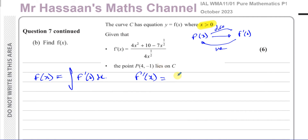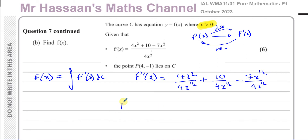We split the fraction: 4x² over 4x^(1/2) gives x^(3/2) — since 4 cancels with 4, and dividing index form means subtracting powers: 2 minus 1/2 equals 3/2. The 10 over 4x^(1/2) term gives 5/2 × x^(−1/2), writing the denominator x^(1/2) as x^(−1/2) in the numerator. Note: the 2 stays in the denominator — a common mistake is to write 2x^(−1/2), but it should be (1/2)x^(−1/2).